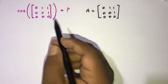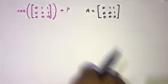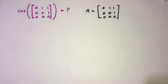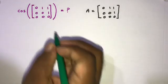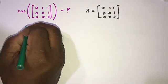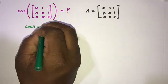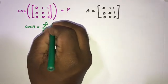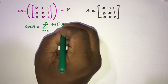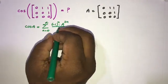Now we need to find the cosine of A. In previous videos we discussed the arctangent of a matrix, square root of a matrix, and logarithm of a matrix using eigenvalues. But here I am going to use the Maclaurin series of cosine of A.